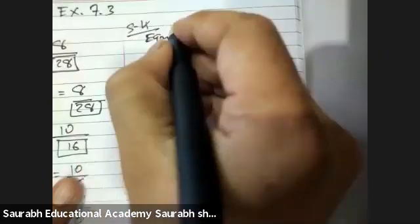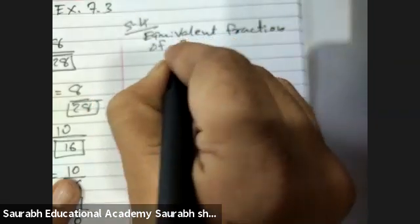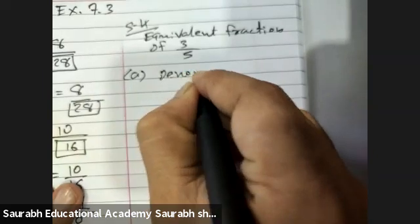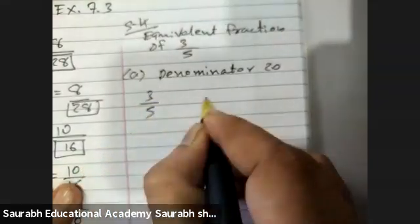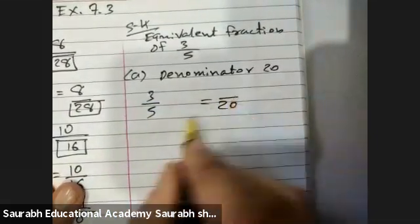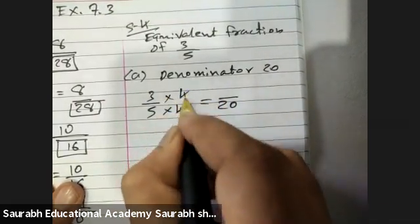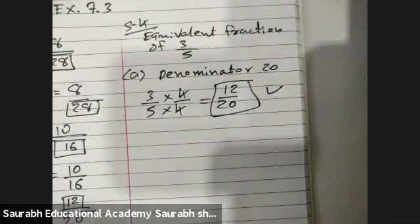Sum Number 4. Find the equivalent fractions of three by five with denominator 20. Three by five, I want 20 as the denominator. Which number should I multiply? Five fours are 20. Then here also 4. Three fours are 12. So the first answer is 12 upon 20.